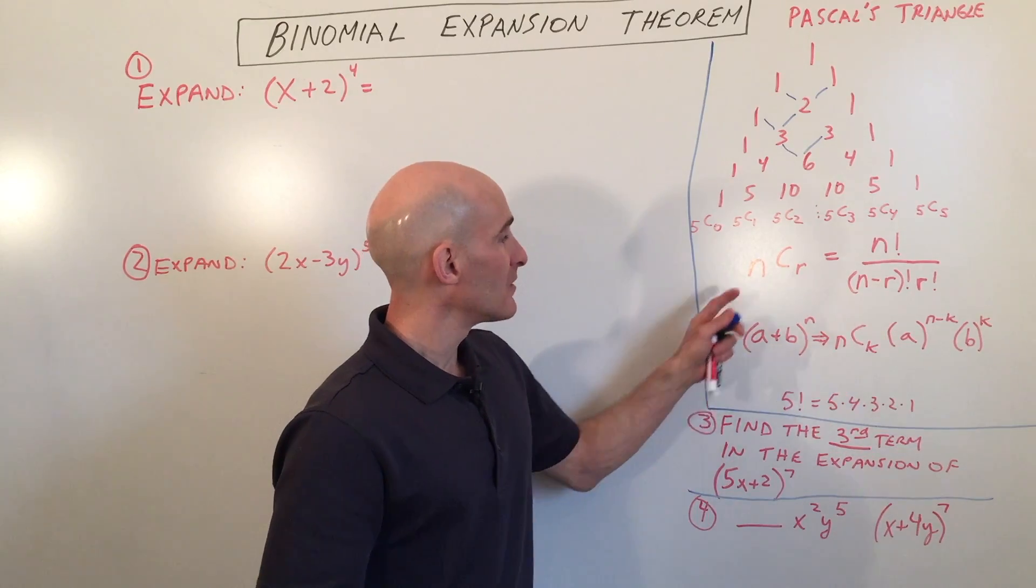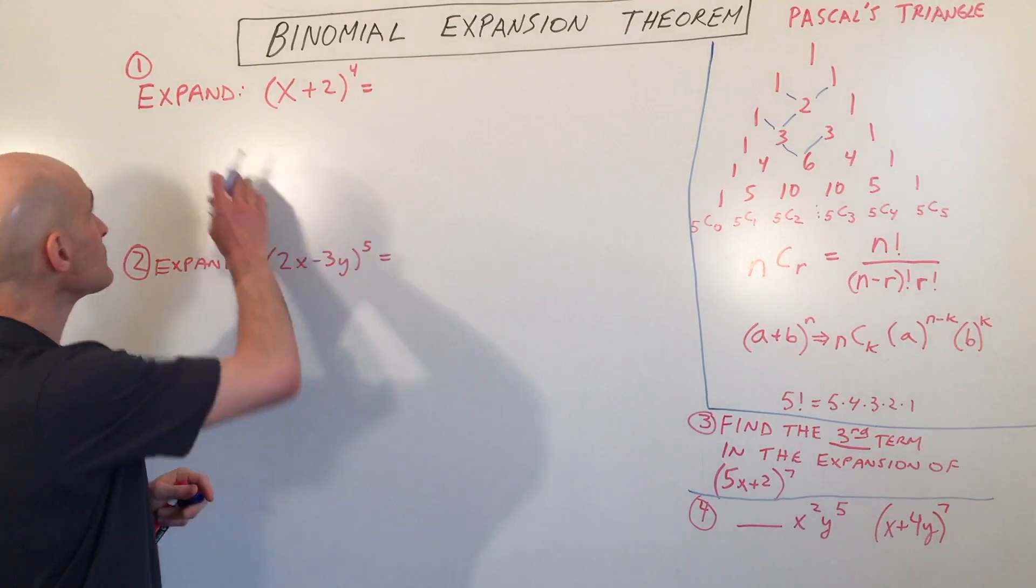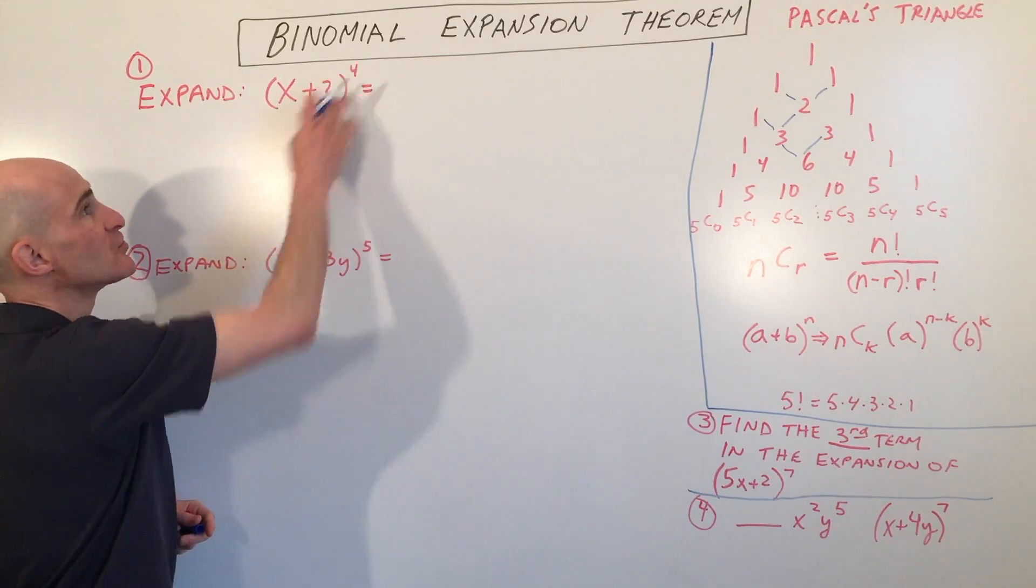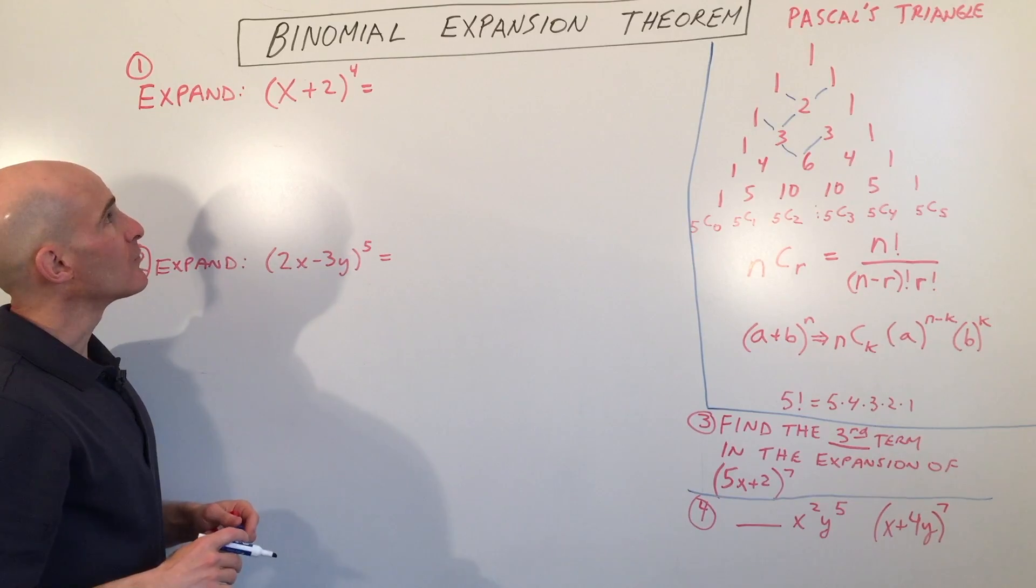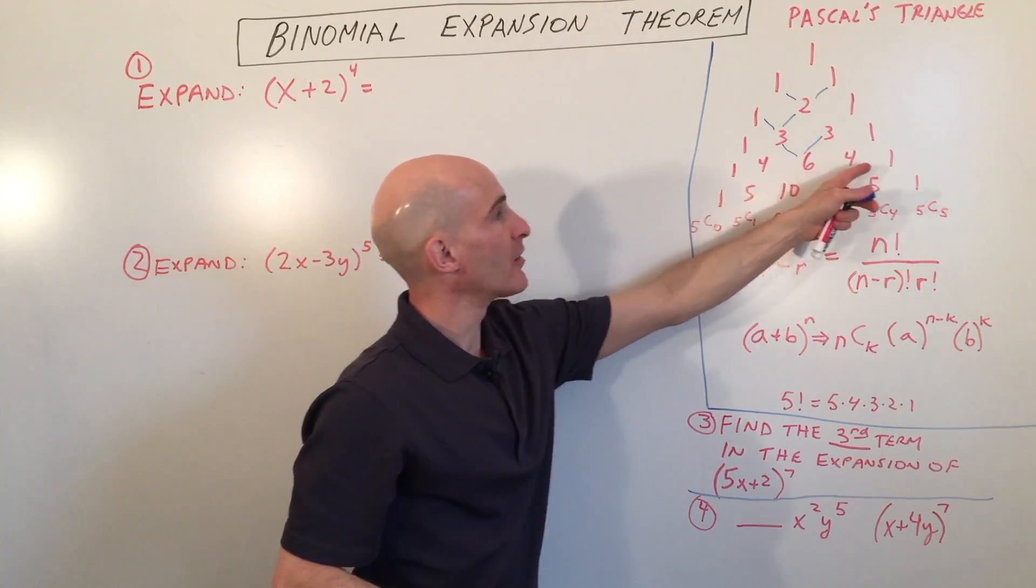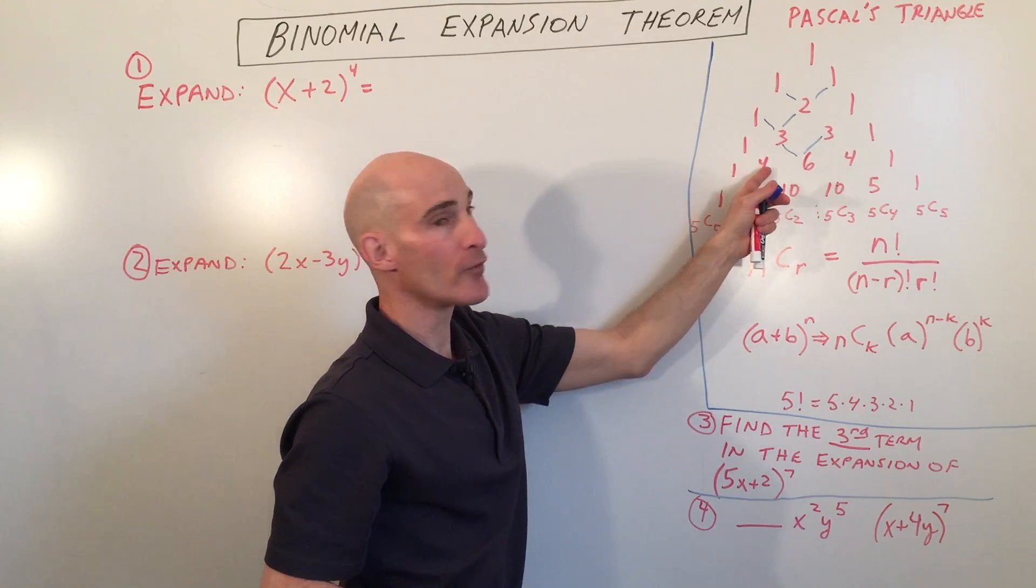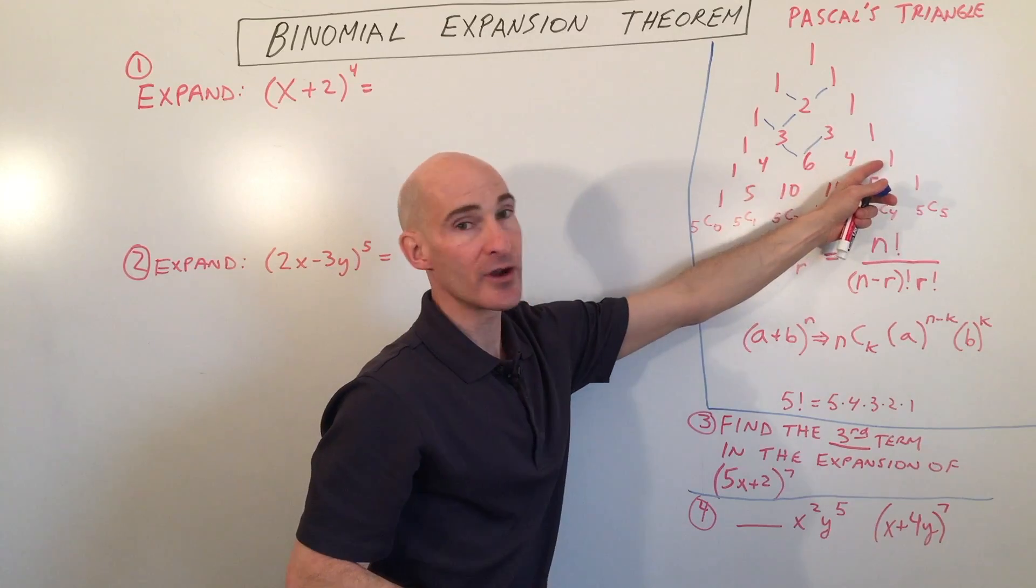So a little bit of an overview here with Pascal's triangle. Let me show you an example how this works. Say we want to expand x plus 2 to the fourth power. One option is we can go down to the fourth row of Pascal's triangle. By the way, this starts at row 0, and then it goes row 1, row 2, row 3, row 4. So we're going to look at this row here.